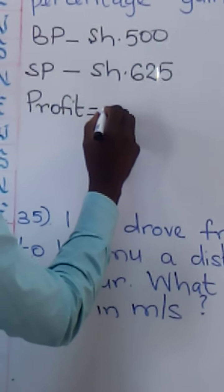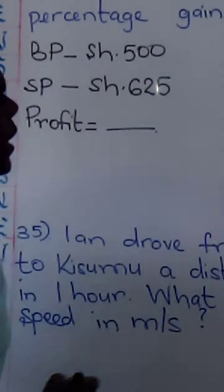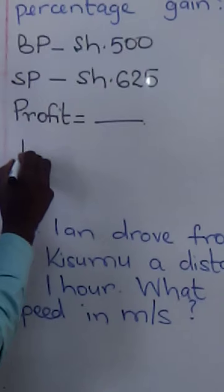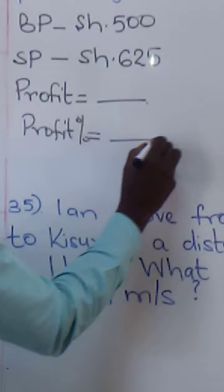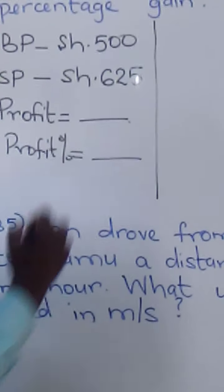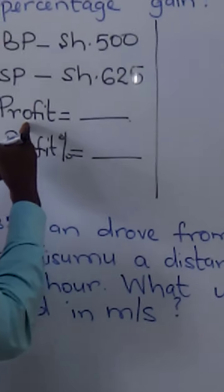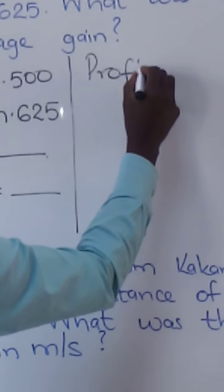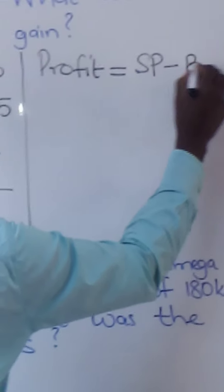We need to know the profit in shillings first. After knowing the profit in shillings, we will calculate the percentage profit. So let us go on with the calculation. We first find the profit. Profit is equal to the selling price minus the buying price.